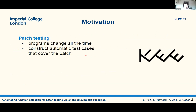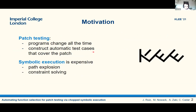In order to do this, one way to go about it is symbolic execution. The problem with symbolic execution is that it is expensive. It suffers from the well-known path explosion problem and constraint solving in general is hard.